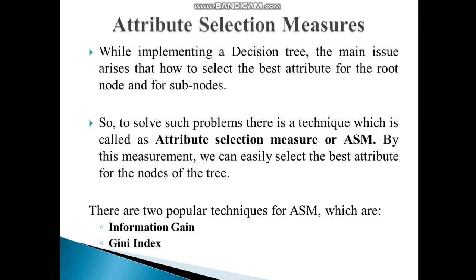While implementing a Decision Tree, the main issue arises: how to select the best attribute for the root node and sub-nodes. To solve this problem, there is a technique called Attribute Selection Measure, or ASM. By this measurement, we can easily select the best attribute for the nodes of the tree. There are two popular techniques of ASM, which are Information Gain and Gini Index.